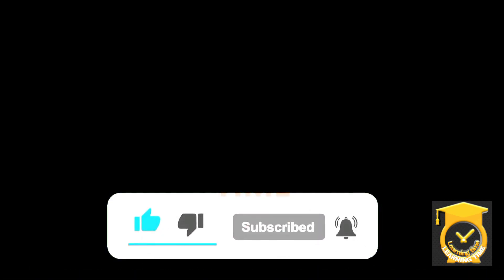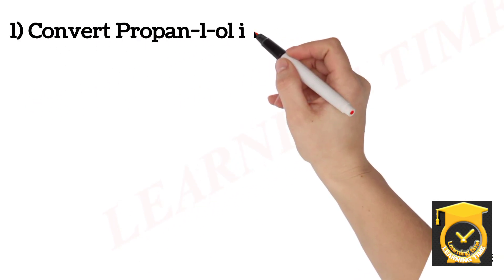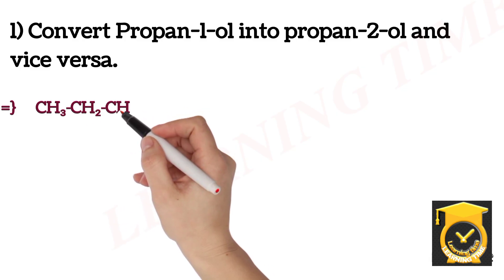Let's start this video. In this question, we need to convert propan-1-ol into propan-2-ol and vice versa. First, write the propan-1-ol structure: CH3-CH2-CH2-OH.